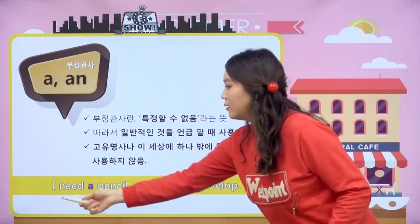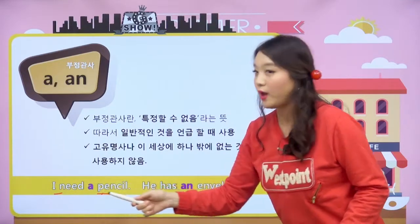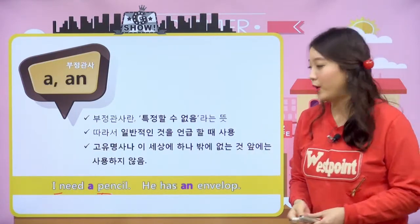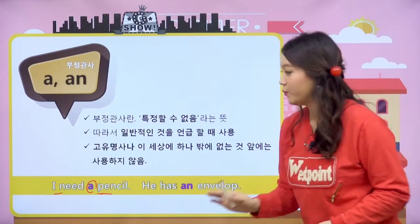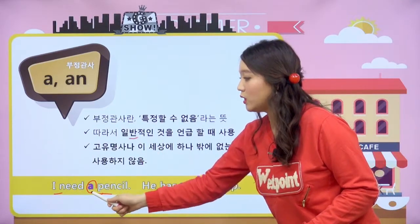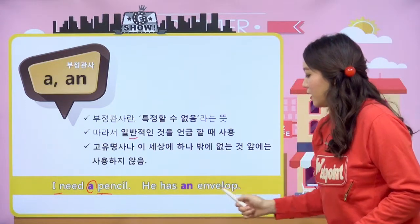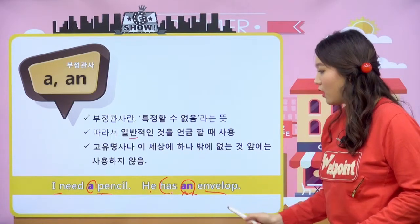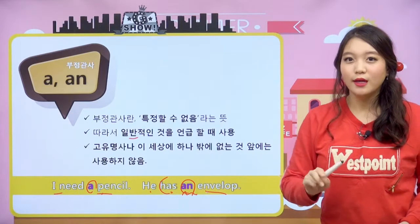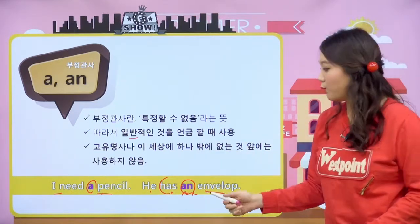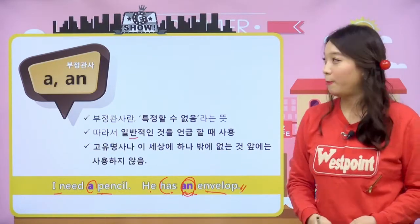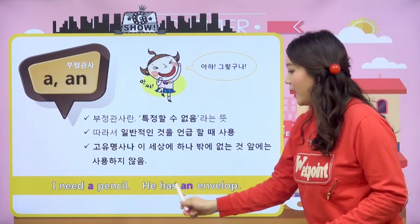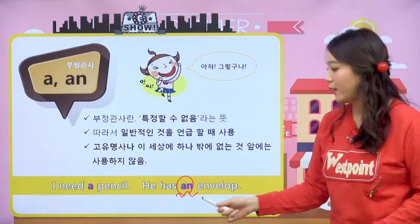I need a pencil 하게 되면 나는 연필이 필요해. 특별히 저 연필이어야만 돼가 아니라 그냥 아무 연필이나 연필 하나만 있으면 돼 라는 거예요. He has an envelope. 그는 일반적인 봉투를 하나 가지고 있다 라는 뜻의 문장이 됩니다. 정해지지 않은 것 앞에, 일반적인 것을 언급할 때 하나일 때 사용하는 게 a와 an이다.